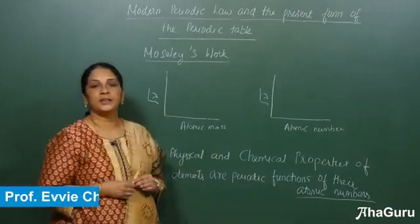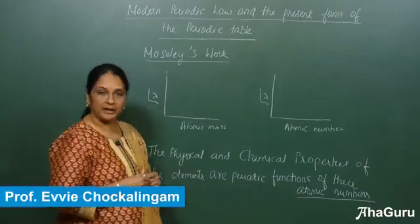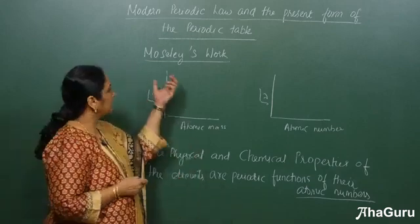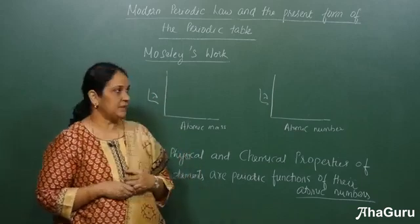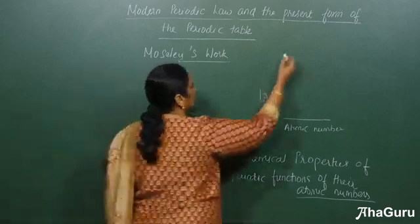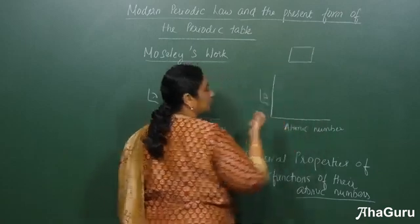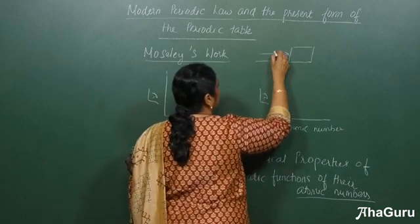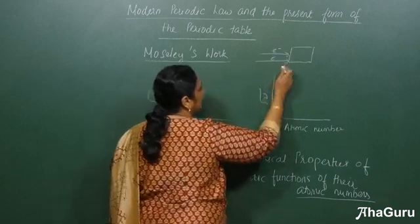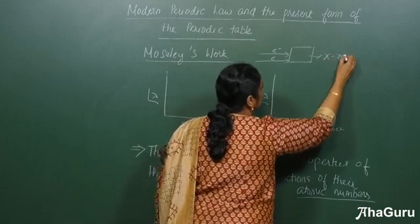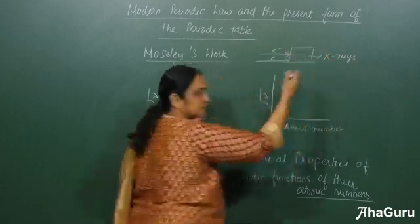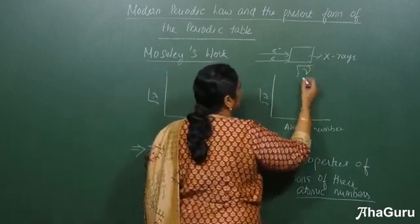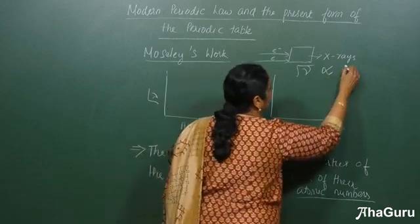Modern periodic law and the present form of the periodic table. After the discovery of subatomic particles, Moseley did some work on high atomic weight elements. He took a high atomic weight element, took the metal, then bombarded it with high speed electrons. When he bombarded that, some X-rays were produced. X-rays will have some frequency, and he found that the root of frequency was directly proportional to the atomic number.